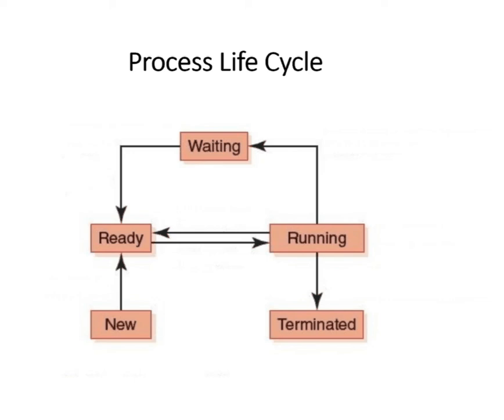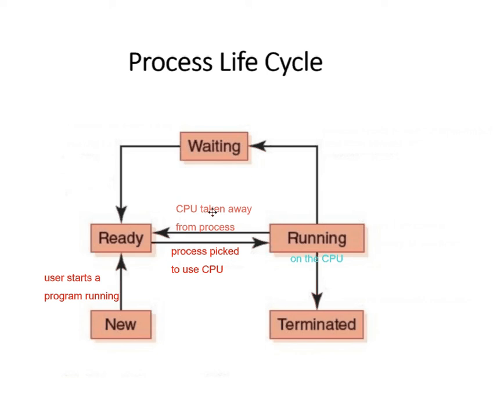The process cycle. We've gone through a number of programs line by line using assembly language. Imagine we start one of those processes now — we have a brand new process. The user starts a program running: it launches Word, it asks for a DVD to play, whatever. It goes to the ready state and then eventually the CPU picks it up. Imagine it's actually on the CPU — this is when we were running our programs line by line in assembler. What if for some reason the CPU is taken away from the process? It's not done, but the process is interrupted and the CPU is taken away to do something else. Then it has to go back into the ready state. It might be picked up again by the CPU and then give it up again.